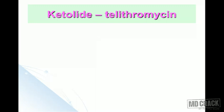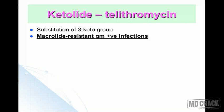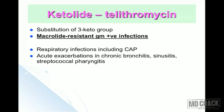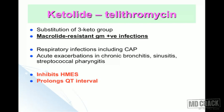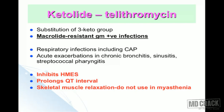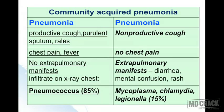Ketolides: telithromycin is a ketolide antibiotic related to macrolides, with substitution of a three-keto group. It can be used for macrolide-resistant gram-positive infections, including community-acquired pneumonia, acute exacerbations of chronic bronchitis, sinusitis, and streptococcal pharyngitis. Disadvantages include CYP450 inhibition, QT interval prolongation (risk of cardiac arrhythmia), and skeletal muscle relaxation — so it should not be used in myasthenia gravis patients.